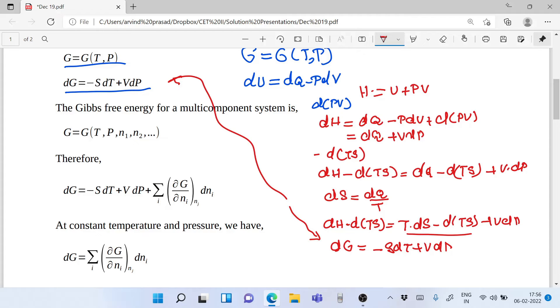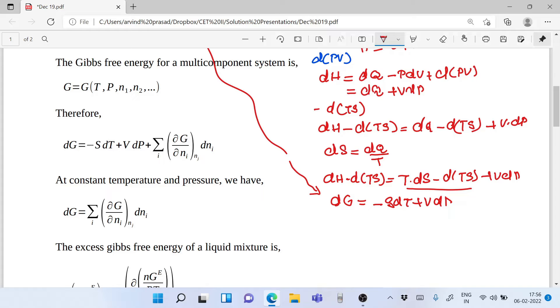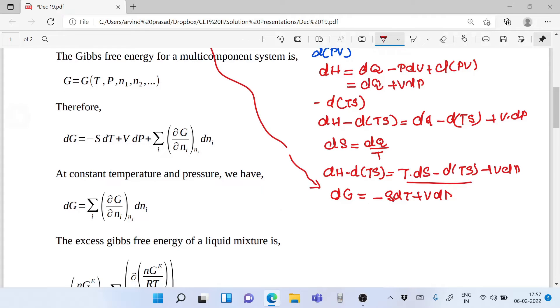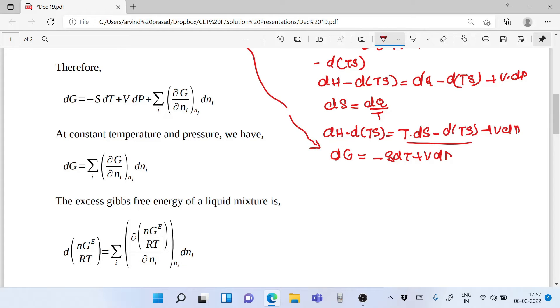If we take a multi-component system, then Gibbs free energy can be written as a function of temperature, pressure and the masses of individual components. If we differentiate it, we can write dG equals minus S dT plus V dP plus summation of partial G by partial Ni at NJ constant times dNi. At constant temperature and pressure, the first two terms cancel off, and we get dG equals summation of partial G by partial Ni holding NJ constant times dNi.